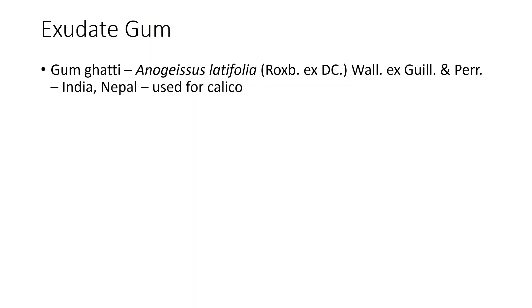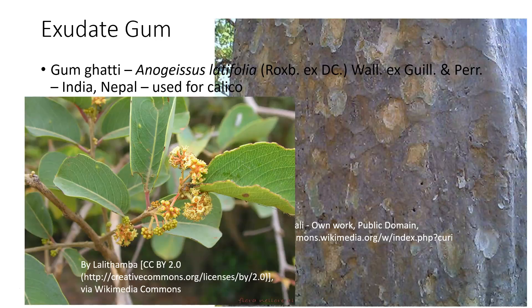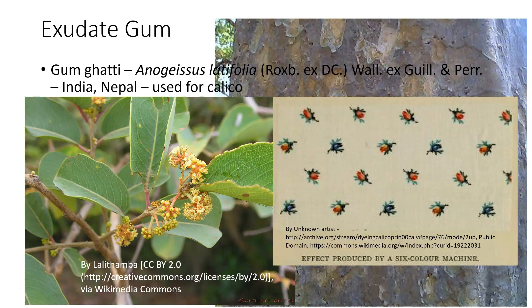Gum ghatti is indigenous to India and Nepal. It is used in the production of calico, a type of fabric whose unique appearance is created by treating it with the gum. The material is picked up from the outside of the tree where it has been injured. The tree has a very small inflorescence and is fairly prolific. Gum ghatti is thus associated with a certain type of staining on cloth.